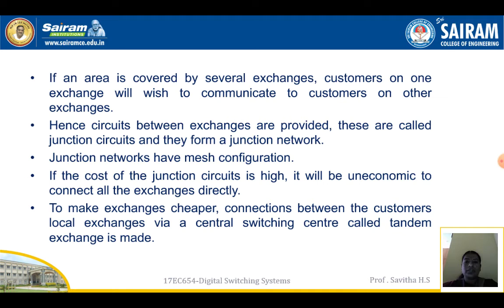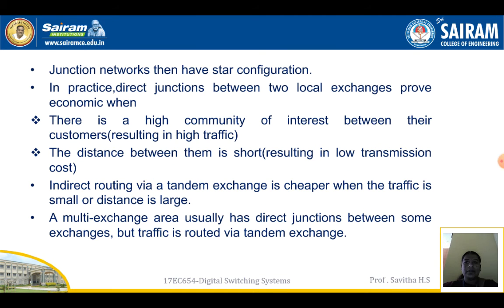If the cost of junction circuits is high, it will be uneconomic to connect all exchanges directly. To make connections between customers cheaper, local exchanges are connected via a central switching center called a tandem exchange. The junction network then has a star configuration. In practice, direct junctions between two local exchanges prove economic when there is a high community of interest between their customers.